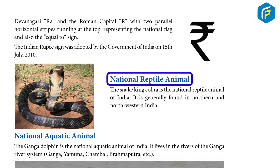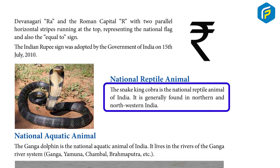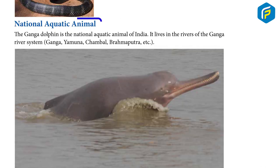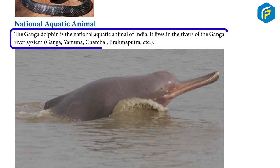National Reptile Animal: The King Cobra is the national reptile animal of India. It is generally found in northern and northwestern India. National Aquatic Animal: The Ganga Dolphin is the national aquatic animal of India. It lives in the Ganga river system — Ganga, Yamuna, Chambal, Brahmaputra, etc.